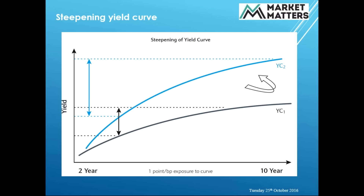I'll touch on this further because it's relevant for bank earnings. If you think about a bank — a bank borrows short and lends long. For example, a term deposit might earn you 2%, which is what the bank pays you, so that's their cost. They're lending on a mortgage book at around 4% at the moment. So they're borrowing short and lending long. Naturally, if that yield curve is steepening — with longer rates going up more so than short-term rates — banks tend to benefit from it.